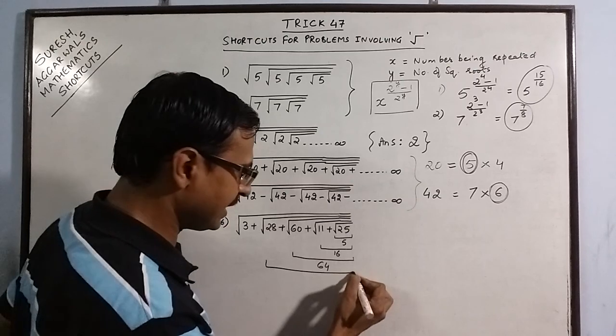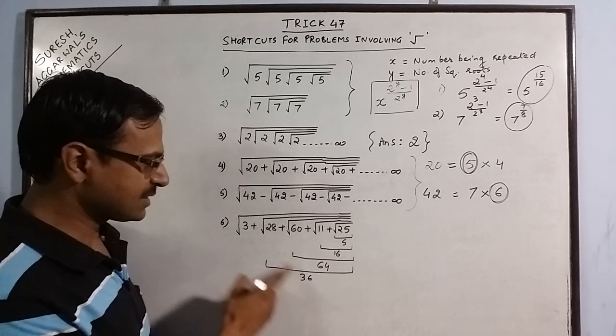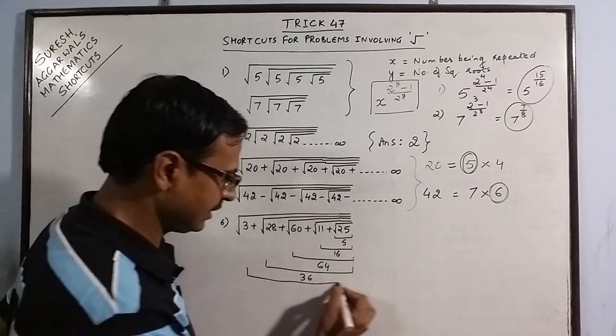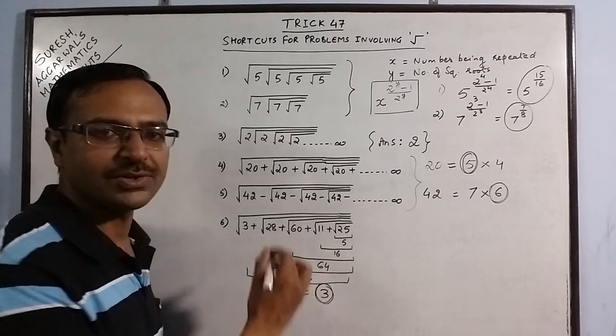28 plus 8 is 36. Square root 36 is 6. 6 plus 3 is 9. And under root 9 is 3. So your answer is 3.